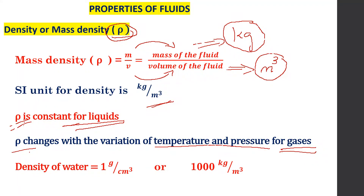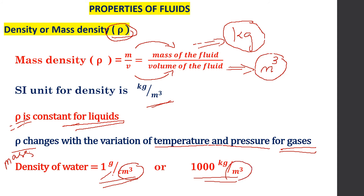The density of water is 1 gram per centimeter cube, or equivalently 1000 kilogram per meter cube. This is the mass density of water.